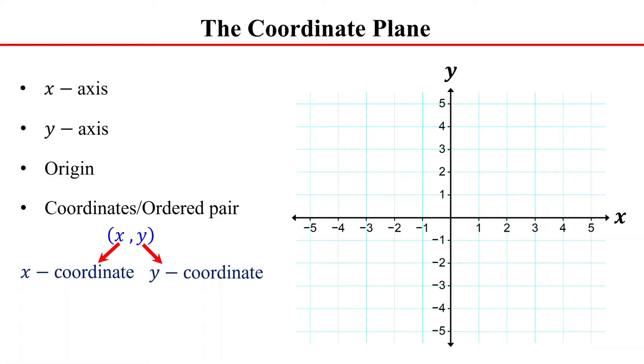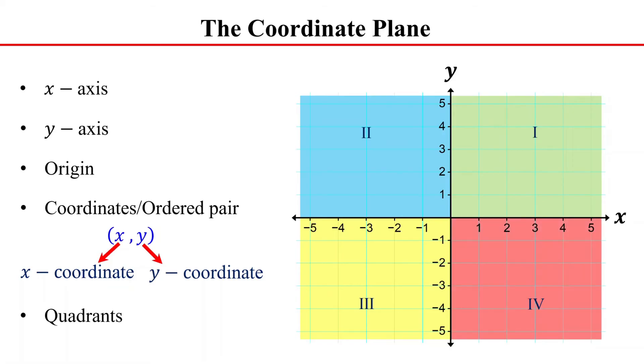The x and y-axis divide the coordinate plane into four regions, called quadrants. The top right region is quadrant 1. The top left region is quadrant 2. The bottom left region is quadrant 3. The bottom right region is quadrant 4.